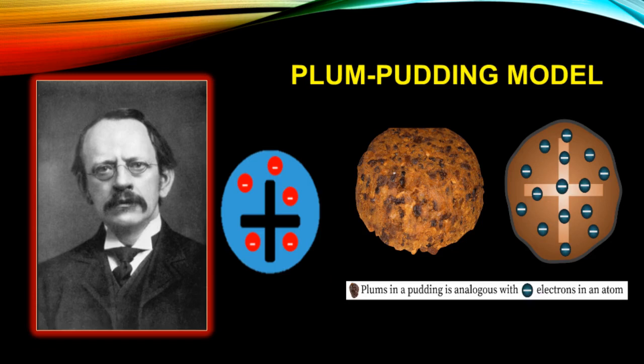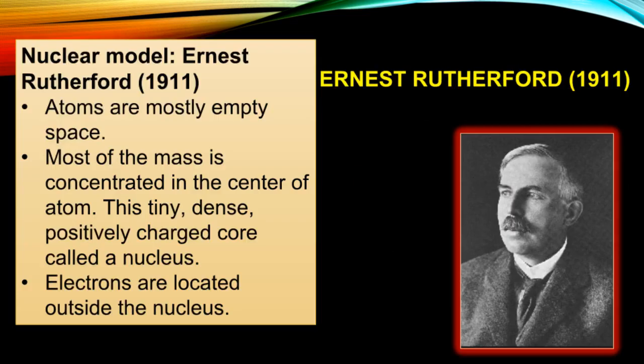The plum pudding atomic model is one of the earlier atomic theories. The model was proposed by JJ Thomson, who is also known for the discovery of the electron. Electrons are distributed inside a positive mass like raisins in a plum pudding — the positive charge is represented by the pudding, while the negatively charged electrons are the plums.